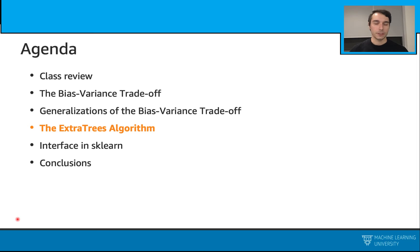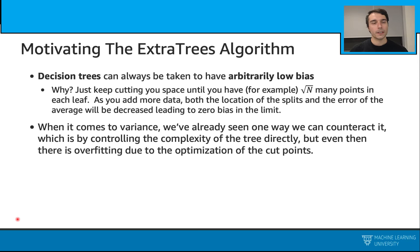Let's talk about the ExtraTrees algorithm. Previously with decision trees, we saw that we can have arbitrarily low bias.